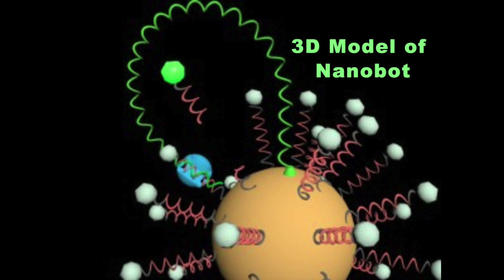The nanomachine is made of a 20 nanometer gold particle, smaller than the head of a pin.